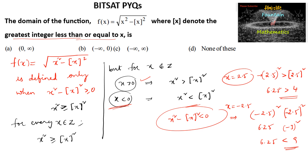Among the options, the function is defined for all integers and positive real numbers, but not defined for non-integers that are negative. So we can go with option D.